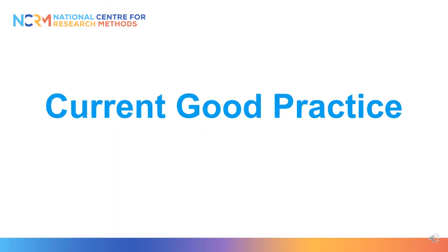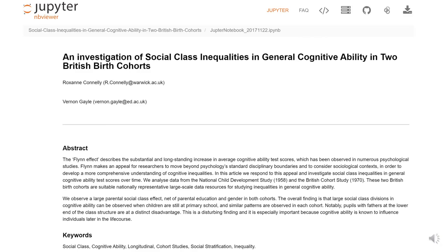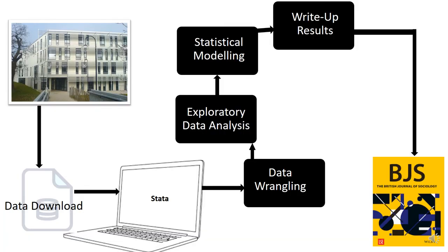An example of current good practice: Connolly and Gayle 2019 published a paper analyzing existing large-scale social science datasets, and they provided an open and transparent workflow. This analysis of social inequalities used existing data from two of the UK's long-running birth cohort studies: the 1958 National Child Development Study and the 1970 British Cohort Study. The entire workflow that produced the paper was published within a Jupyter notebook, which included full details of all of the stages of the analysis process — from the initial stage of data acquisition, i.e. downloading the data from the UK Data Archive, and then through the stages of data wrangling, exploratory data analysis, statistical modeling, sensitivity analysis, and writing up and reporting results.